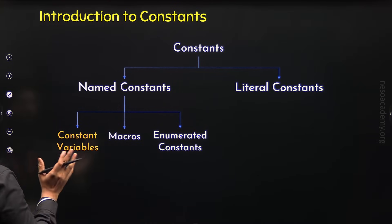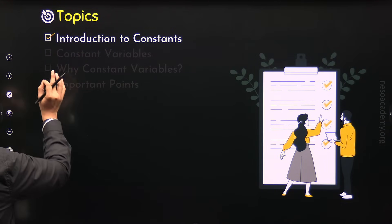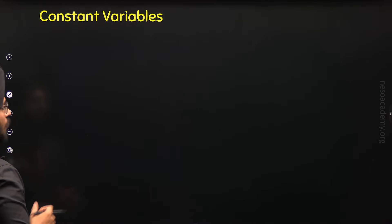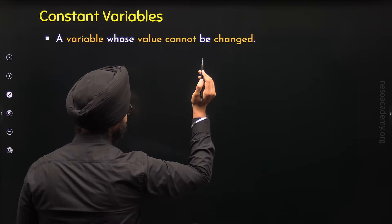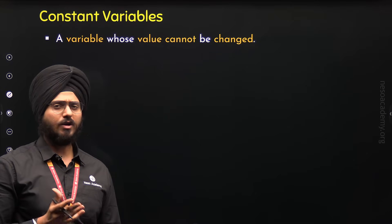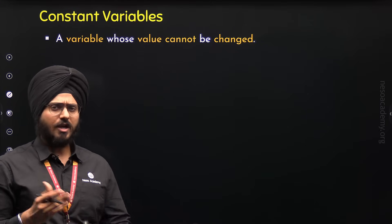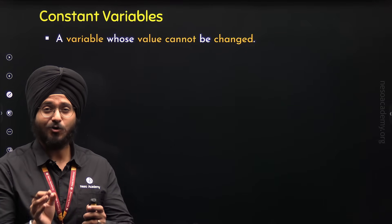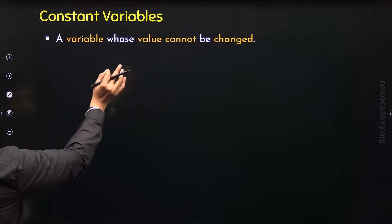Now we know exactly what a constant is and what are its types, so we are done with the first topic, Introduction to Constants. Let's move to the second topic where we will understand constant variables in detail. A constant variable is a variable whose value cannot be changed — it is a special type of variable. We know a variable is something which has the ability to change its value, but a constant variable is a special type whose value cannot be changed.